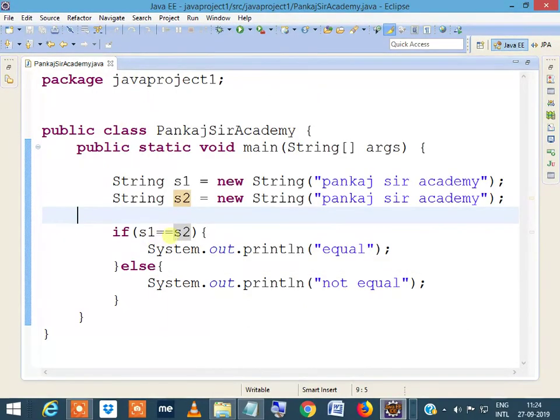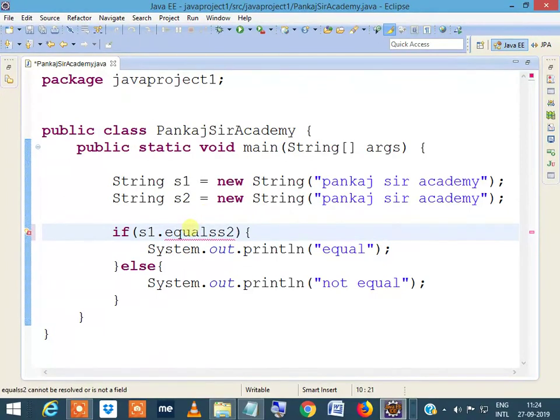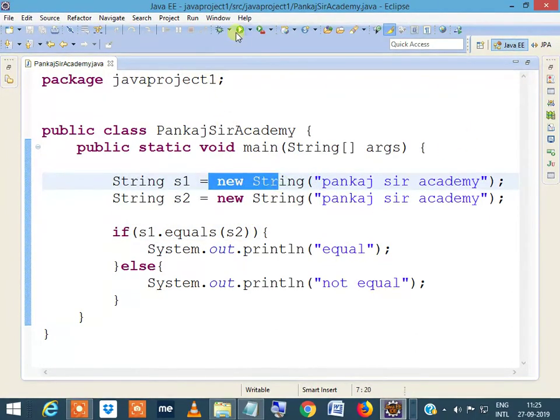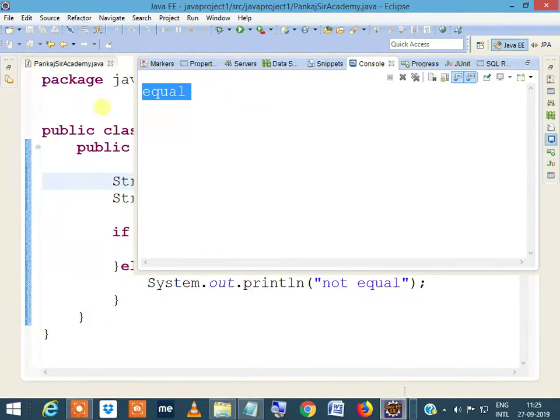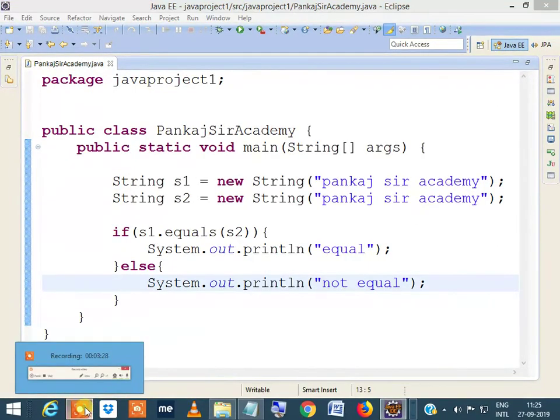But then if I write here dot equals, now we are comparing the value and not the object address. It prints equal. I hope you got the solution.